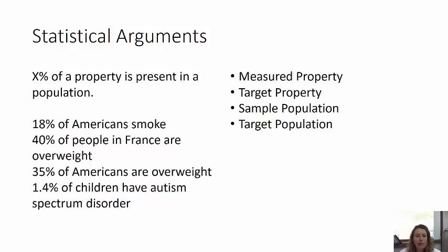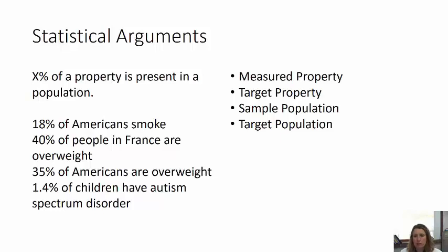Here are some examples. 18% of Americans smoke. 40% of the people in France are overweight. I'm not sure when these statistics are from, but it's surprising that more people in France are overweight than Americans. 35% of Americans are overweight. 1.4% of children have autism spectrum disorder. So 18% of the property 'smokers' are present in the population 'Americans.'